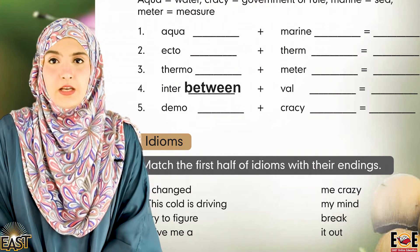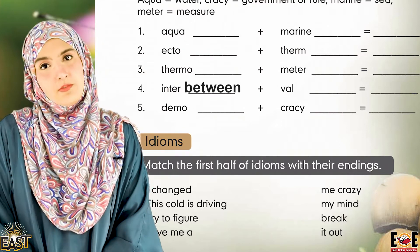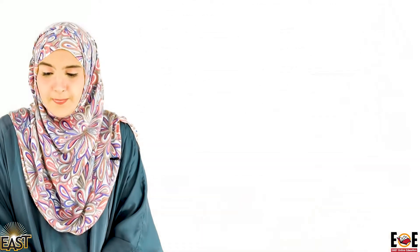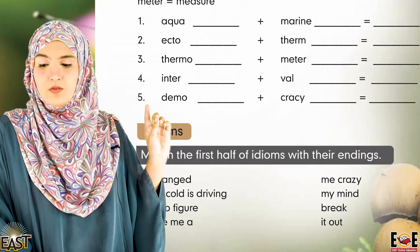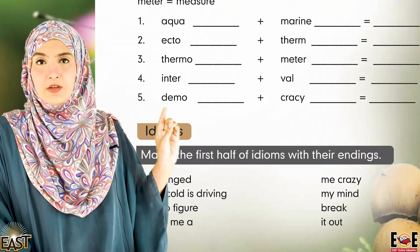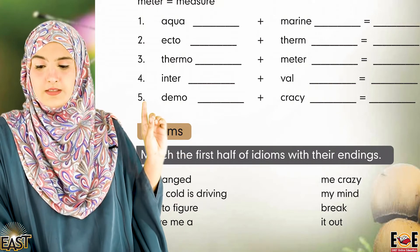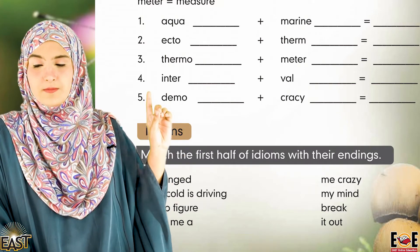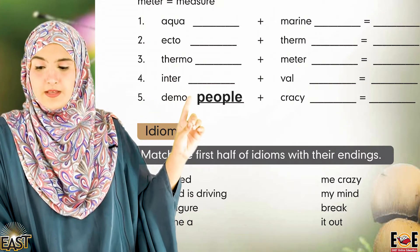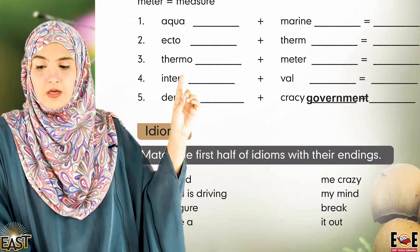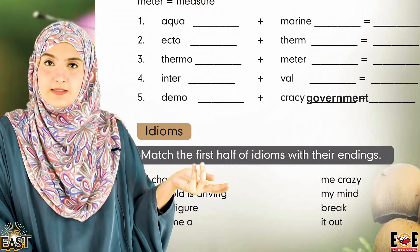Inter means between — that is the right answer. The next one is demo + crazy equals blank. 'Demo' means people, 'crazy' means government. So the answer is people government.